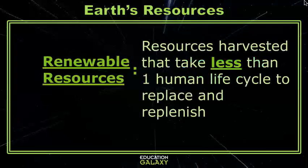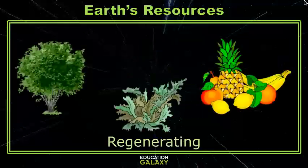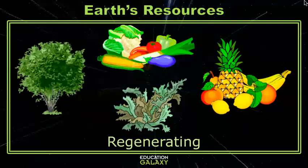Renewable resources are any of the resources that can be regenerated, replaced, or cycled within one human lifespan, or about 60 to 90 years. Renewable resources include things like plants, fruits, trees, and even vegetables, since plants start as a seed and grow to be harvested in one human lifespan. There are a lot of trees and plants that live much longer than 60 to 90 years, but by that time they've at least become mature enough to reproduce.